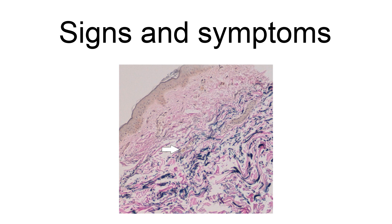These cracks may allow small blood vessels that were originally held back by Bruch's membrane to penetrate the retina. These blood vessels sometimes leak, and these retinal hemorrhages may lead to the loss of central vision.